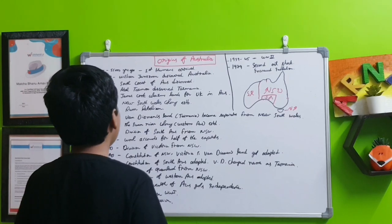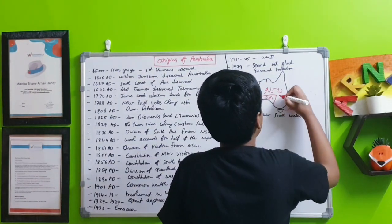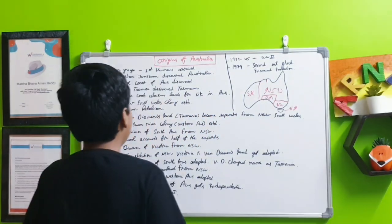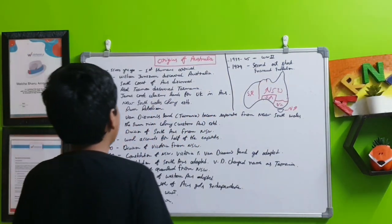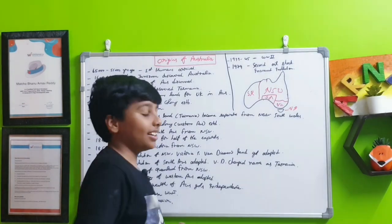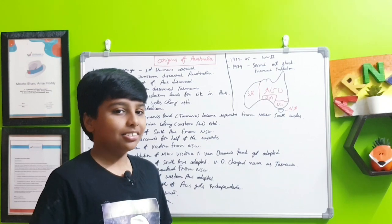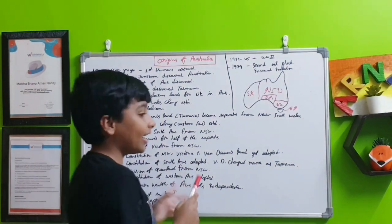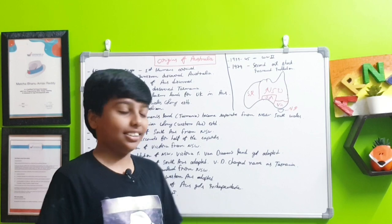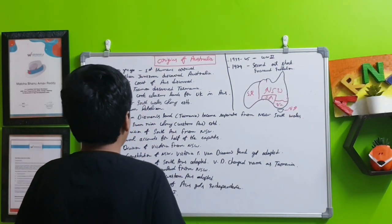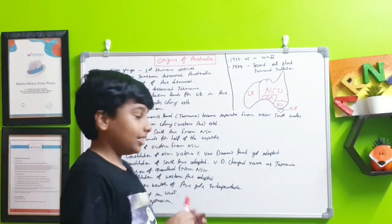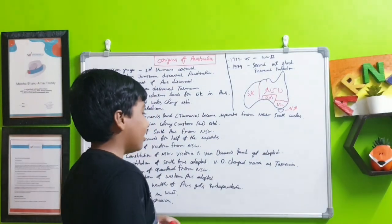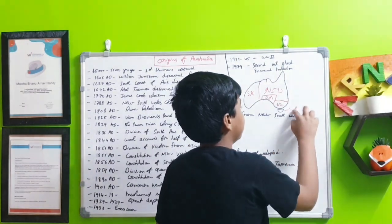In 1851 AD, the division of Victoria from New South Wales happens. In 1855 AD, the constitutions of New South Wales, Victoria and Van Diemen's Land get adopted by those colonies. At that time they were separate colonies, not just provinces of one large colony. They got some partial autonomy. In 1856 AD, the constitution of Southern Australia is adopted and Van Diemen's Land changed its name to Tasmania.